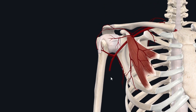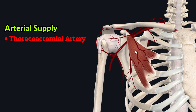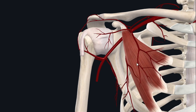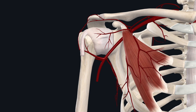Looking at the arterial supply, the pectoralis minor muscle is supplied by the thoracoacromial artery. The branches you see are the pectoral branches of the thoracoacromial artery. This artery comes off the second part of the axillary artery and gives off pectoral branches which supply the pectoralis minor muscle.